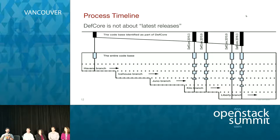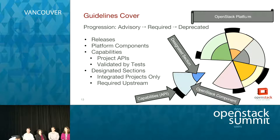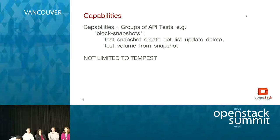When we talk about DefCore, it is by design a subset of the OpenStack project, and it's meant to be a trailing indicator. It's about which APIs are safe, stable, long-term APIs for the product. What we're really doing is picking the components of OpenStack that are time-proven, that are stable, and then providing longevity information about them.